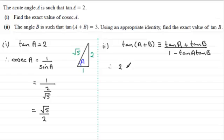So, we've got 2 plus tan B, all divided by 1 minus tan A tan B. So, 1 minus 2 here, multiplied by tan B. 1 minus 2 tan B. And, we're told that the tan of A plus B, then, equals 3. So, this must equal 3.